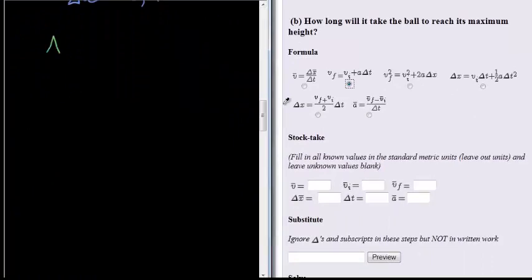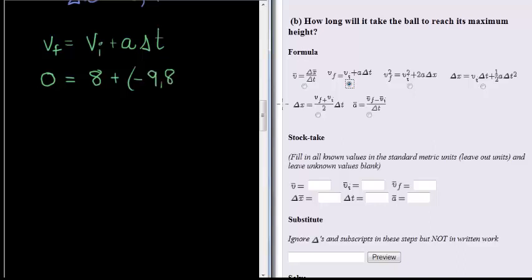We have that future velocity is equal to initial velocity plus acceleration times delta t. Future velocity we know is zero because that's where it reaches its maximum height. Initial velocity was given as eight meters per second. Acceleration because it's downward is negative 9.8, and delta t is what we're trying to calculate.